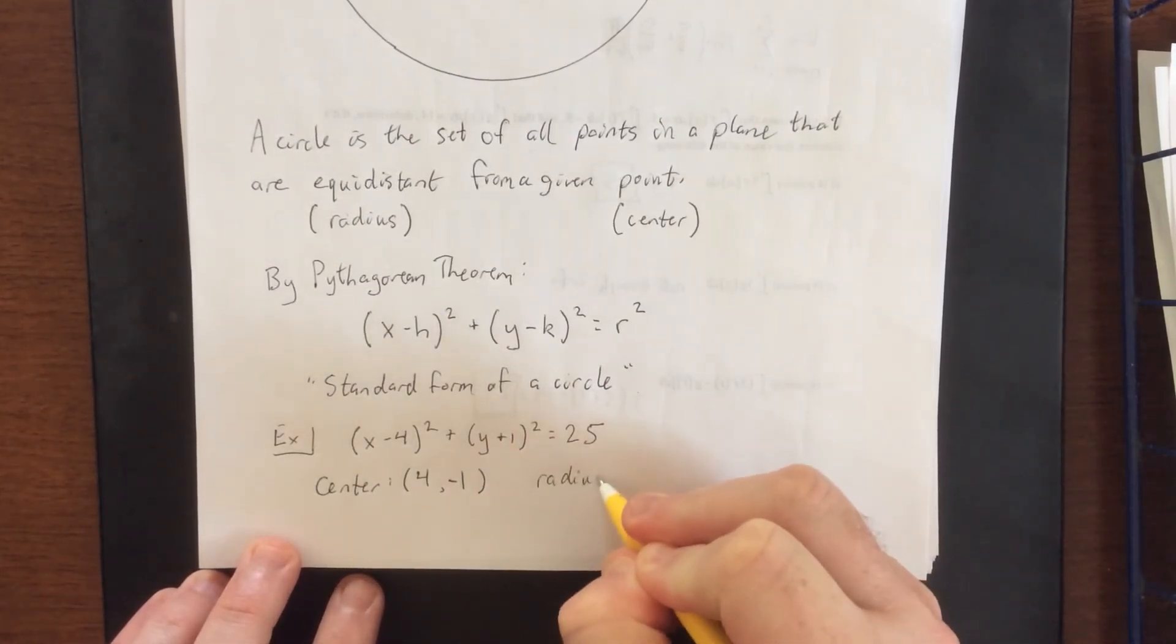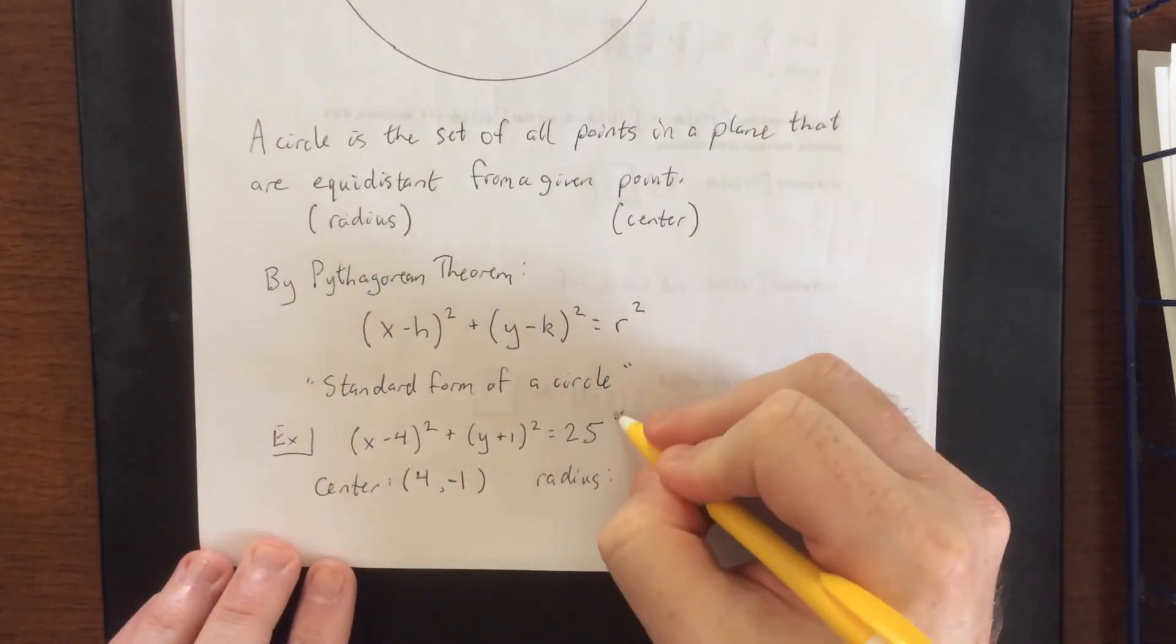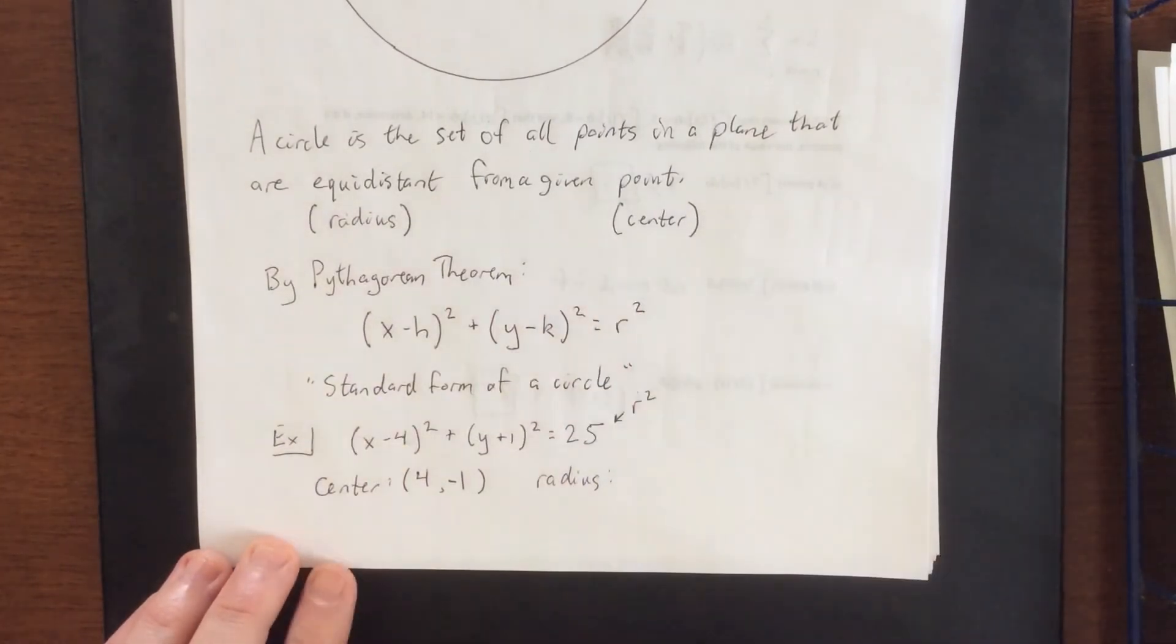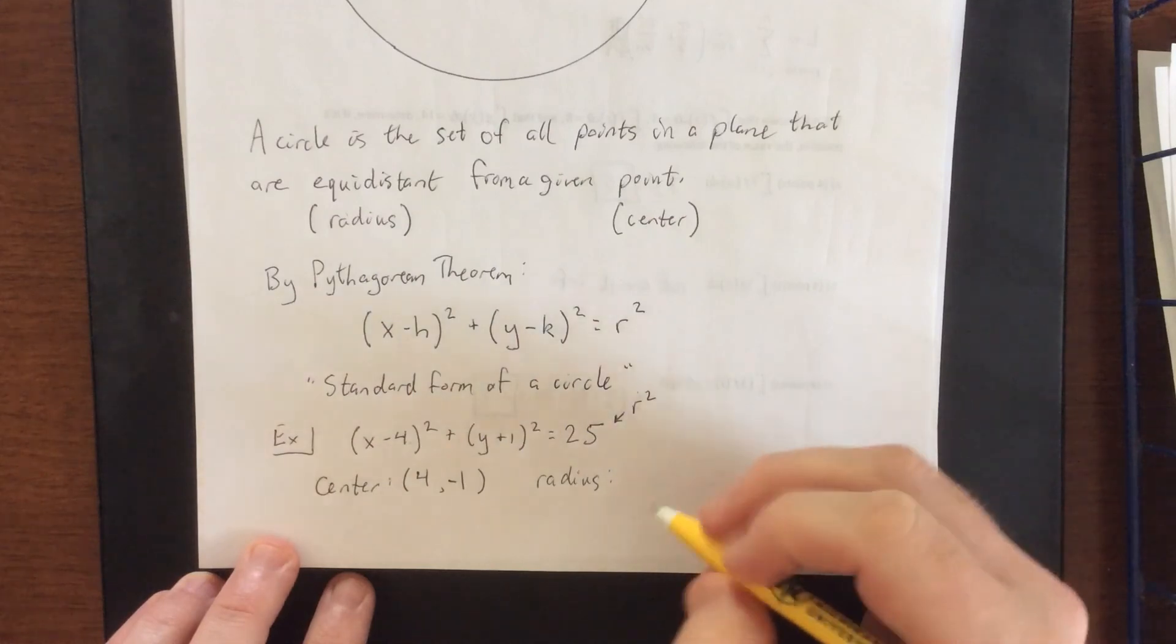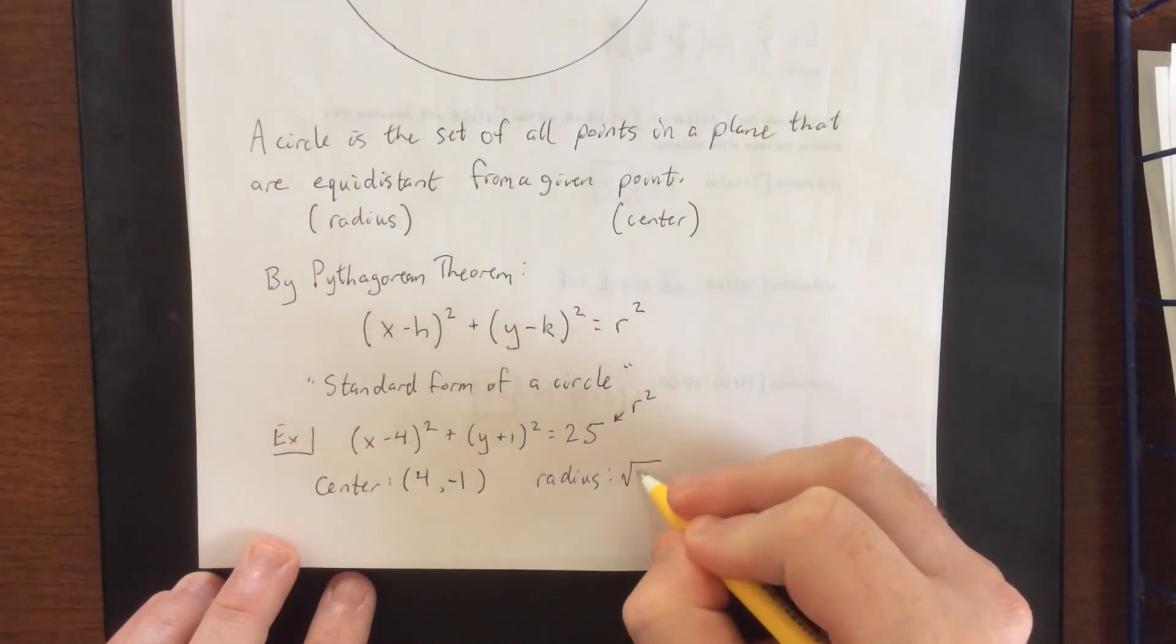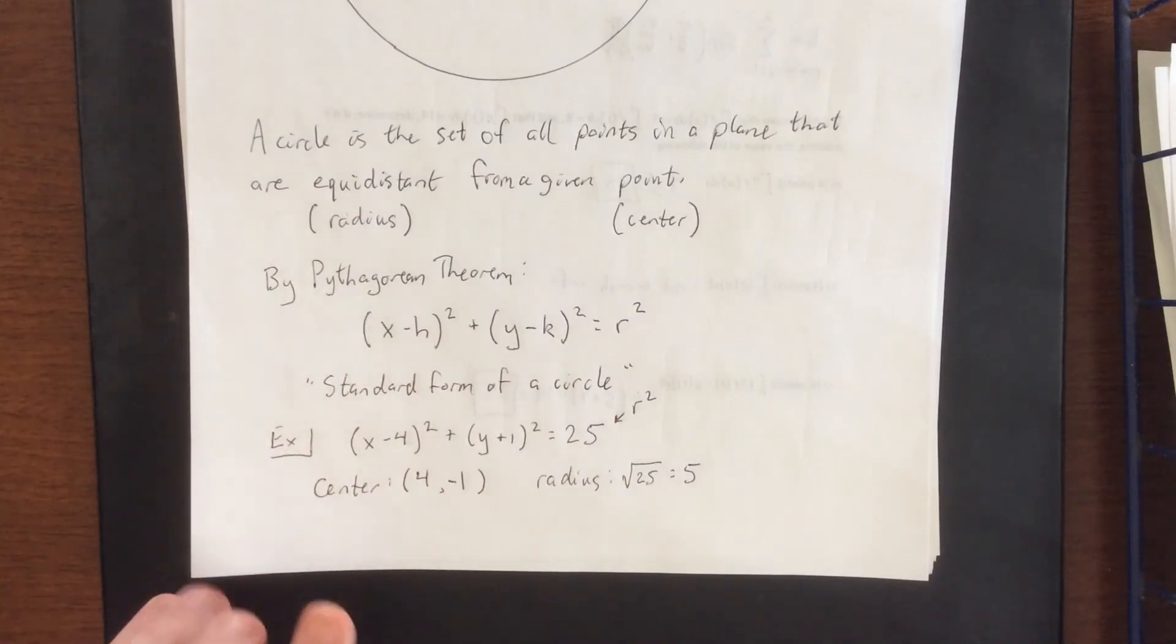Additionally, the radius is going to be the square root of whatever you see here. This number is supposed to be R squared, and because we've defined the radius to be a distance, we don't need to worry about a plus or minus when we take the square root of 25. We could just say positive 5. Again, distance, so it can be positive but not negative.